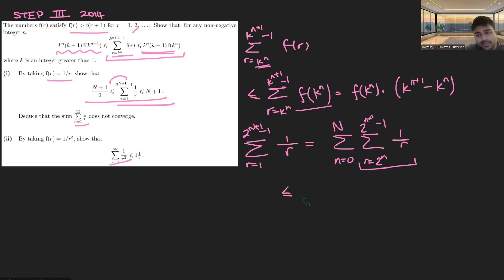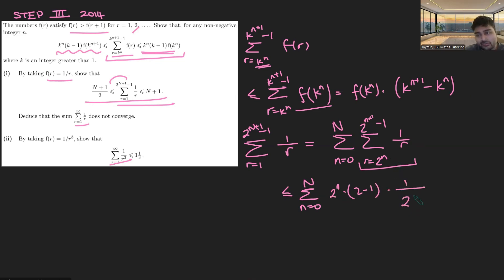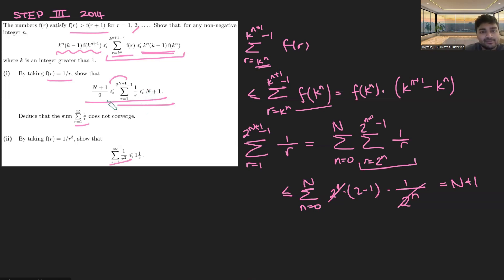Now we apply our result from part A to find an upper bound. With k = 2, each inner sum is less than or equal to 2^n times (2−1) times f(2^n) = 2^n × 1 × (1/2^n). This is really nice because 2^n and 1/2^n cancel, and 2−1 = 1. So we're just summing 1 from n = 0 to N, which is precisely N+1. That gives us our upper bound, and you do something similar for the lower bound.